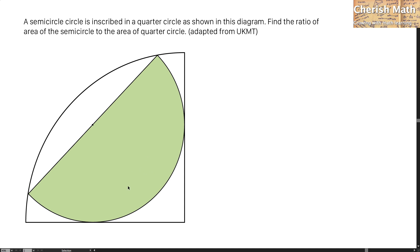In the very beginning, let's set the radius of the quarter circle to be P, while for the radius of the semicircle, I'm going to label with the letter R.